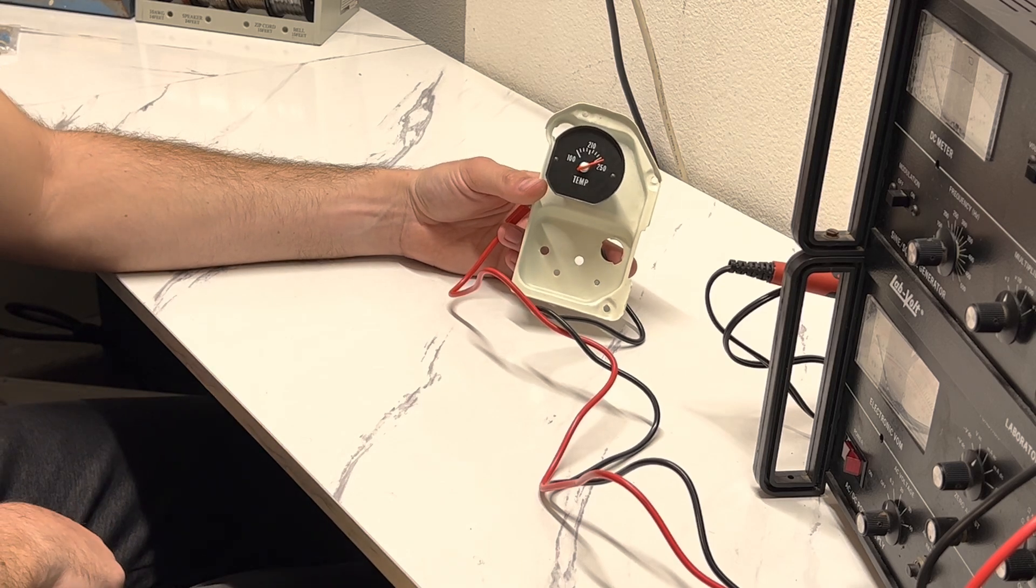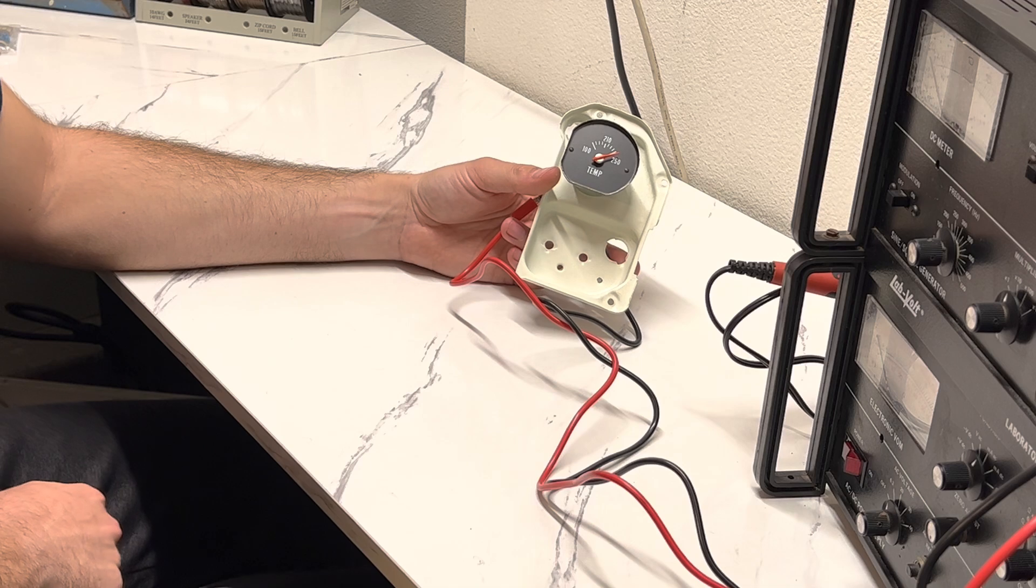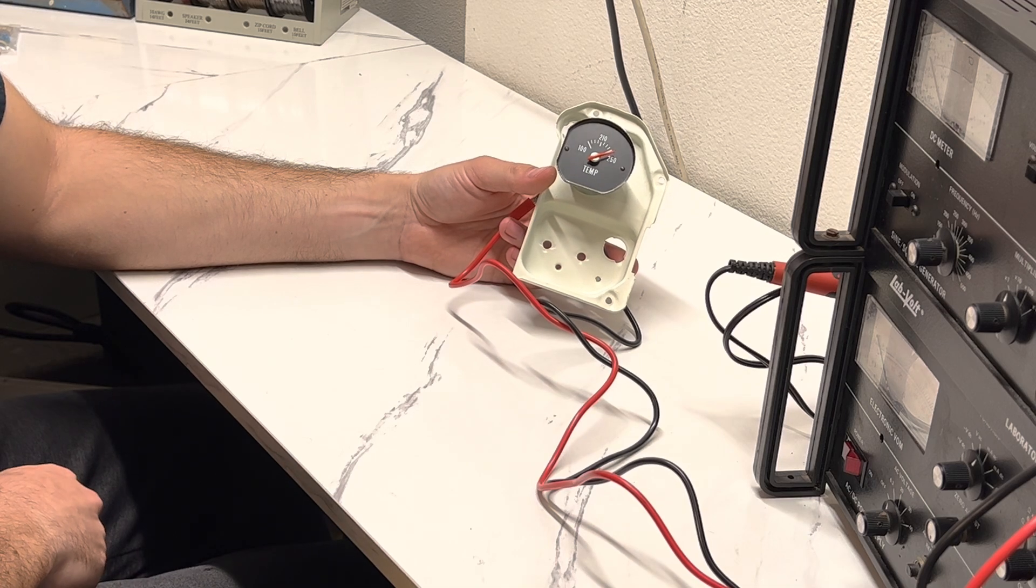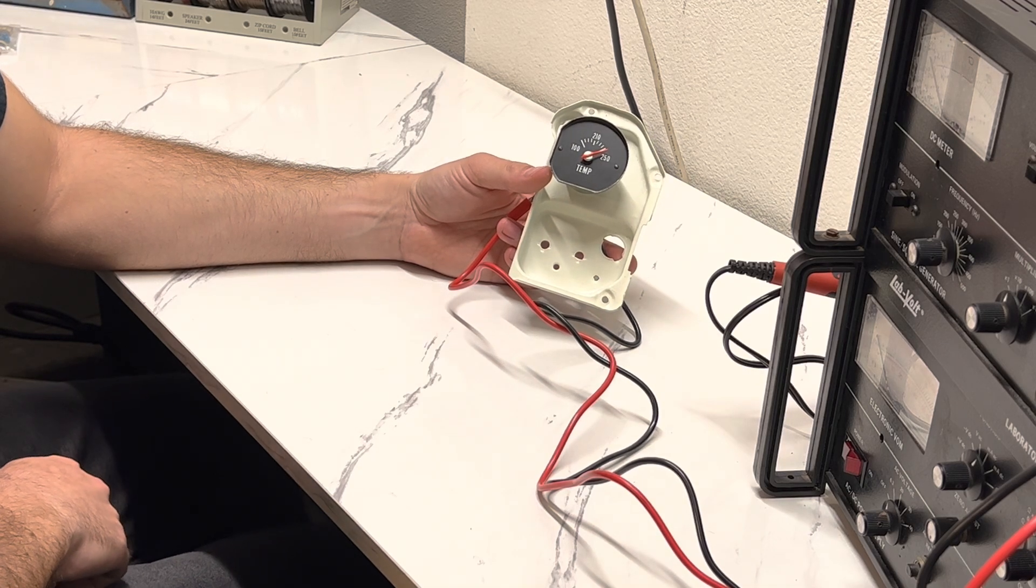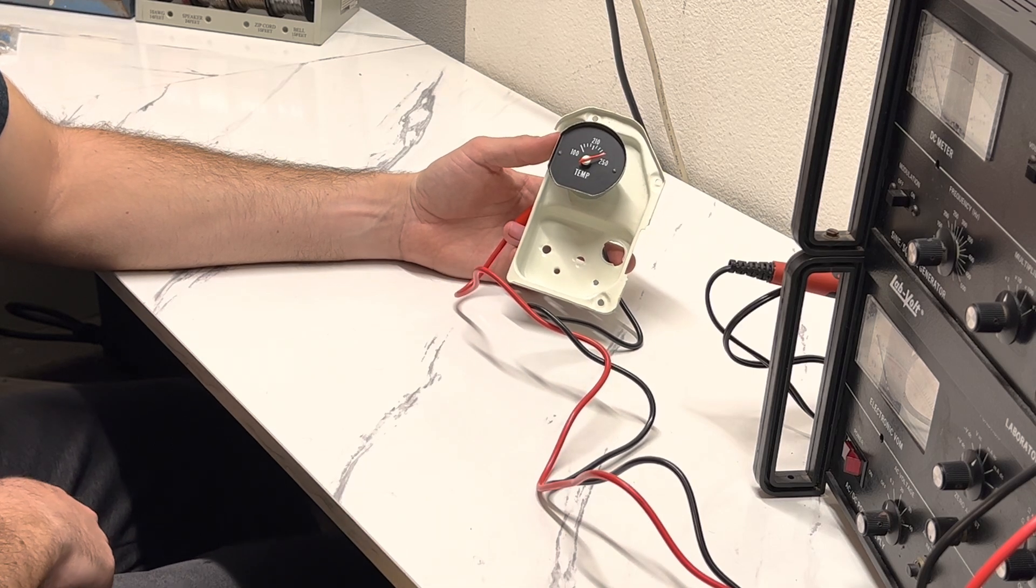The testing is pretty straightforward. You really don't need a whole lot, just a couple resistors and 12 volts, and you'll know if your gauge works before you go through the hassle of installing it. And that'll be it for this video. Thanks for watching.